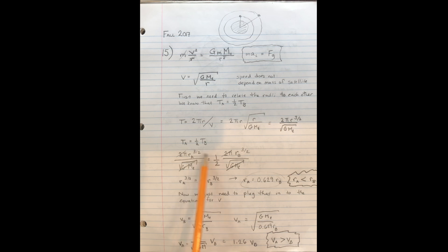Now we can write T_A equals one-half T_B by actually plugging in the values of the radii. We have 2π r_A to the 3/2 divided by the square root of GME equals one-half 2π r_B to the 3/2 divided by the square root of GME. The square roots of GME cancel, the 2π's cancel, and what we end up getting is that r_A to the 3/2 equals one-half r_B to the 3/2.